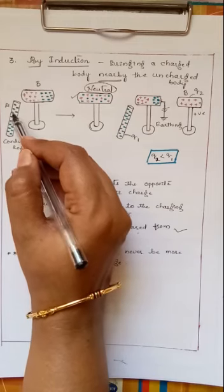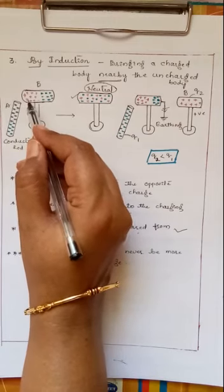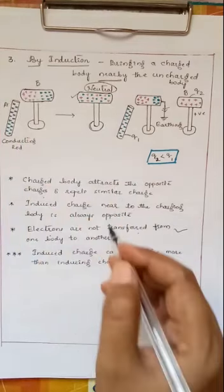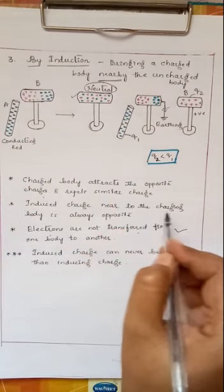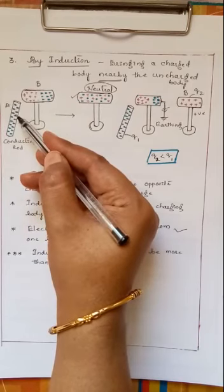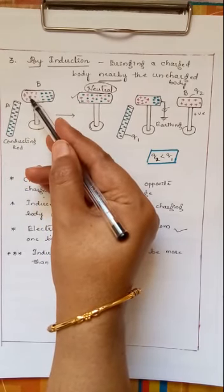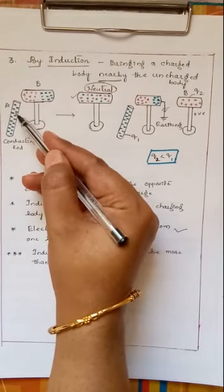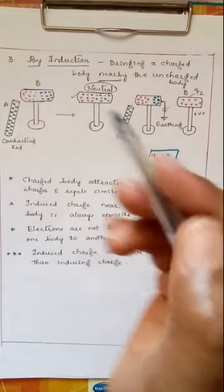So this is attracting opposite charge. Negatively charged body when I brought nearby, it is attracting positive charges nearby. And induced charge near to the charging body is always opposite, the same point. So when I take negatively charged body, so we are seeing opposite charge nearby. If I take positive, I'll see negative charges nearby.